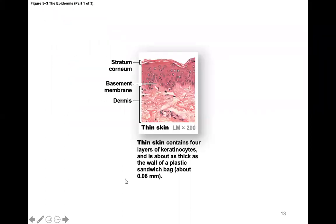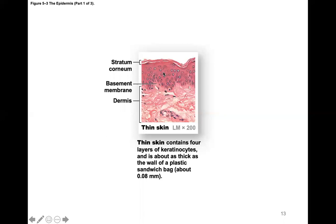Here we can see thin skin with several layers of cells. These are actively growing cells in the lower layers, but when you get to the stratum corneum at the top, these are mainly dead keratinized cells.